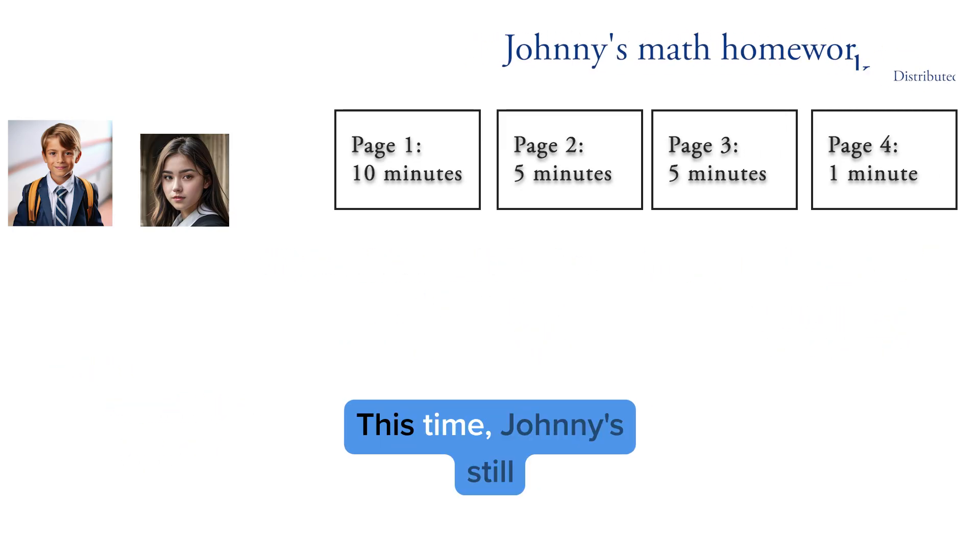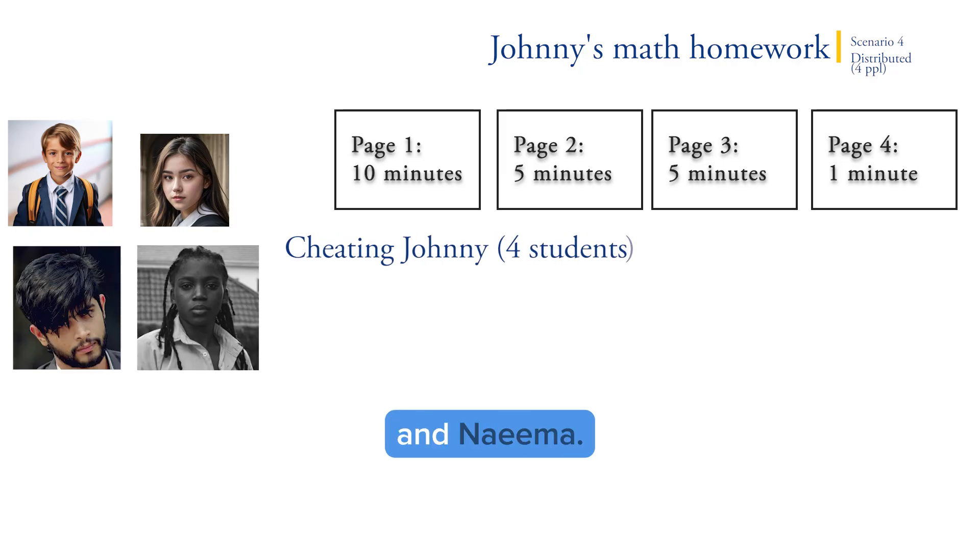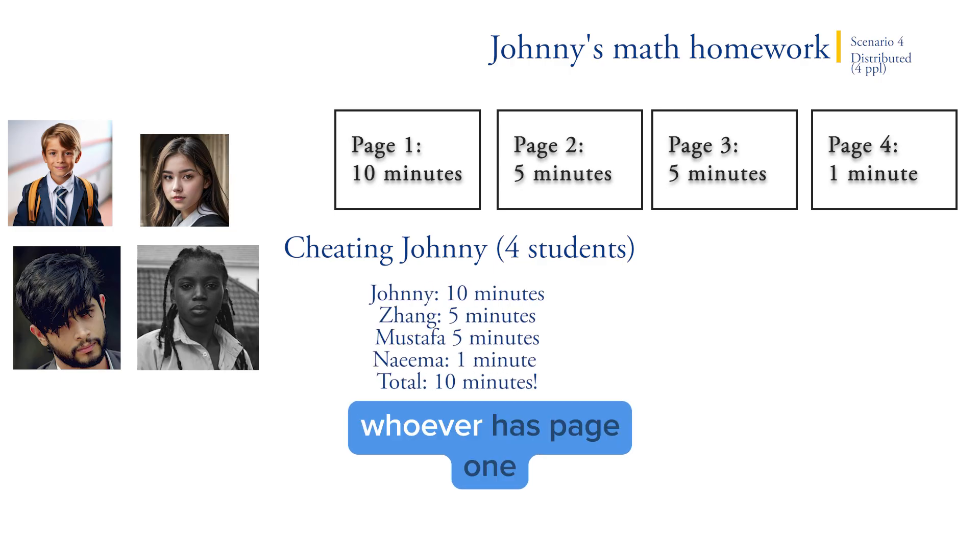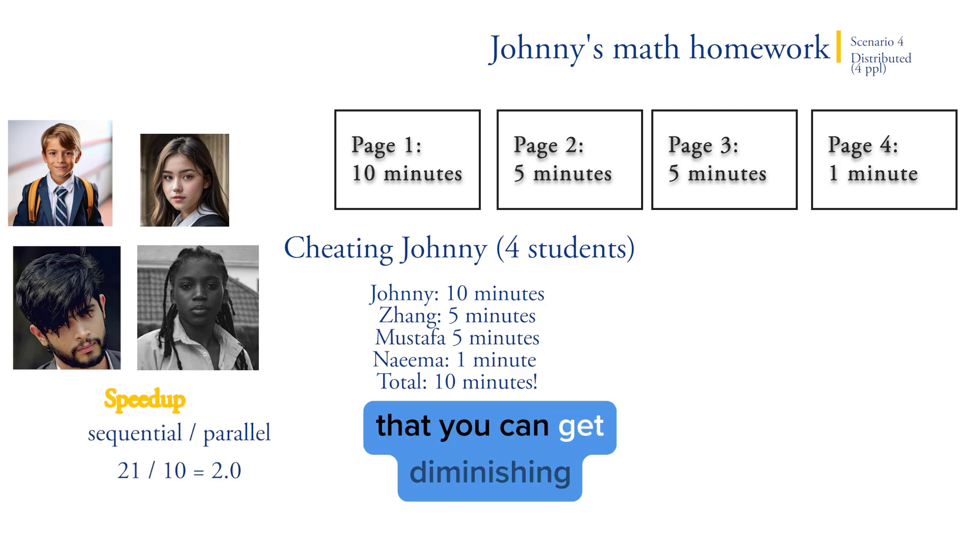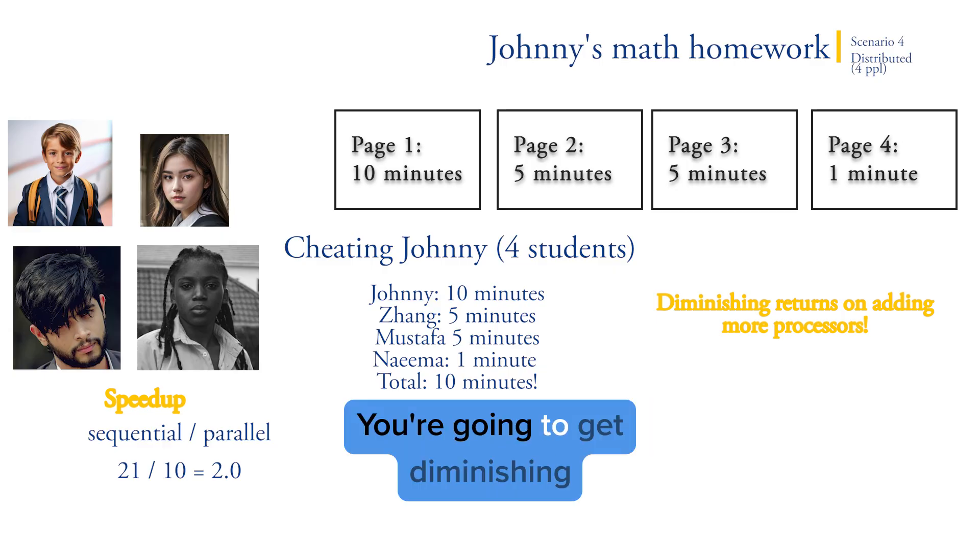Scenario four. This time Johnny's still cheating, but this time with four total people: Johnny, John, Mustafa, and Naima. Again, we can only go as fast as the slowest process. So we can never finish this faster than whoever has page one, which is going to be the slowest and will hold everybody else up. In a scenario like this, AP might ask you to calculate the total time or the speed up as before. One thing to note is that you can get diminishing returns. So you could add 10 times as many people, but you're not always going to go 10 times as fast. This is a key concept on the AP exam. As you add more and more computers, your gains are going to be a little bit less and a little bit less. You're going to get diminishing returns.